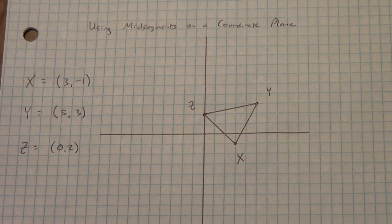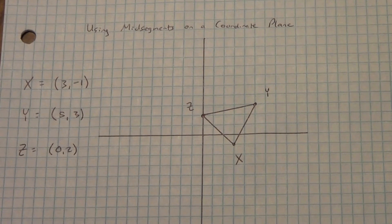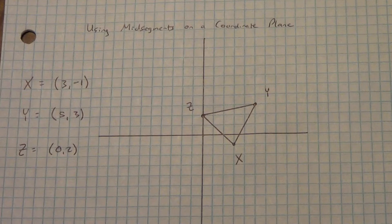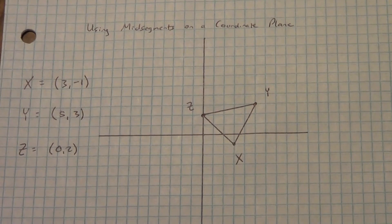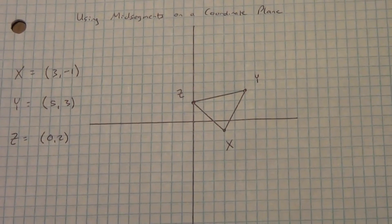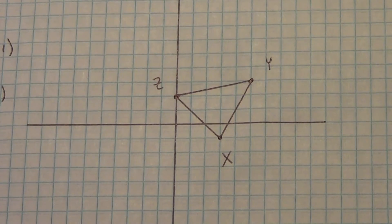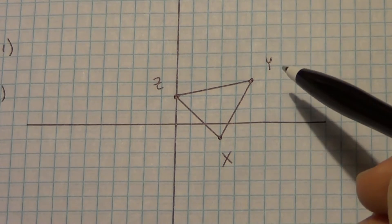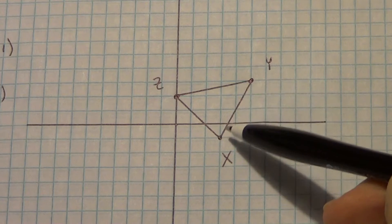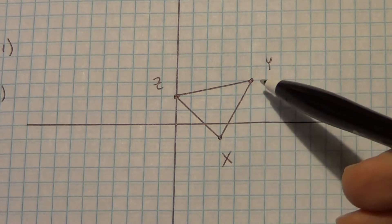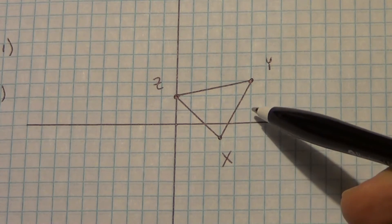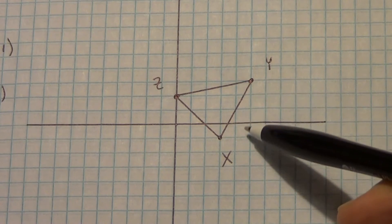We can't use the midpoint formula here because we don't know either x₁ or x₂ — or y₁ or y₂ — so that would cause major issues. There's a much easier way. The mid-segment theorem tells us that a midsegment is parallel to the side it does not intersect, and that the midsegment is half the length of that side. So we're going to find the slope of a side — it doesn't matter which side we start with. I'll start with side XY, going right 2 and up 4.